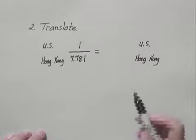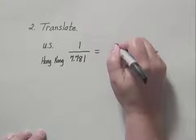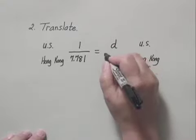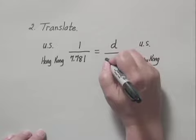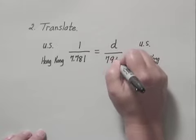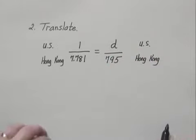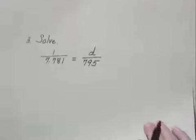And that equals the ratio of the U.S. dollars for the DVD player, which was D, over the Hong Kong dollars for the DVD player, which was 795. So we have a proportion that we can solve in step three of the problem-solving process.